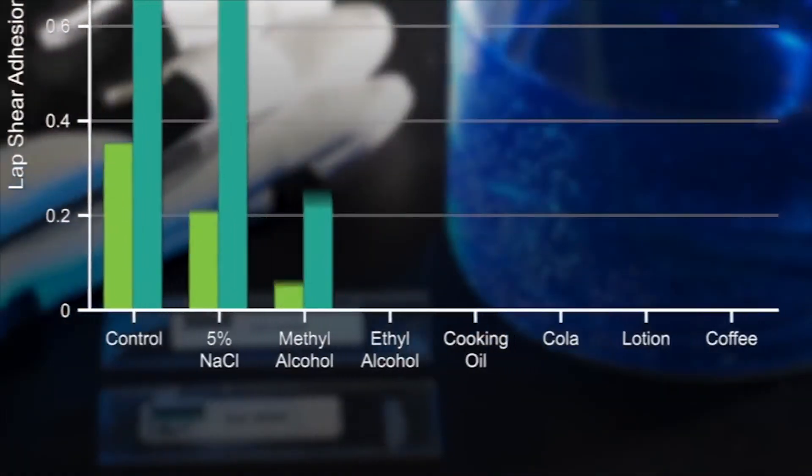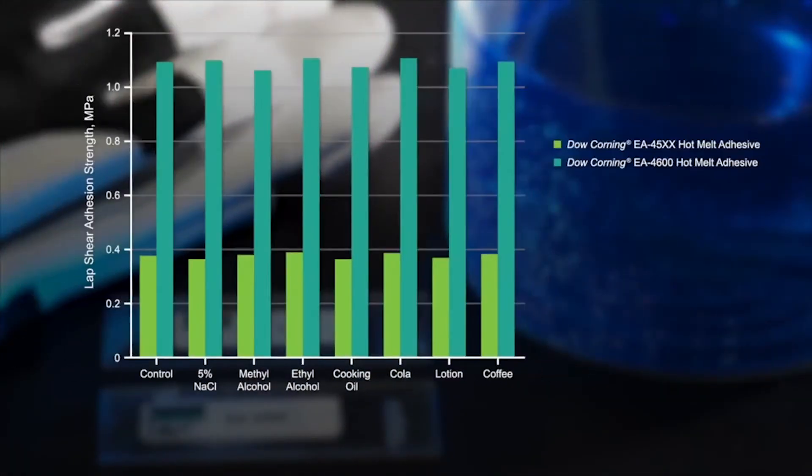Here you can see what happens to adhesion when Dow Corning silicone hot melt adhesives are immersed in the liquids that would most commonly come in contact with electronic devices. The control is on the far left. The samples were cured for three days and immersed in the liquids for one hour before lap shear adhesion strength was tested. Clearly the adhesion of our silicone adhesive is largely unaffected by these test liquids.